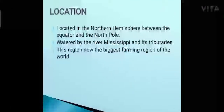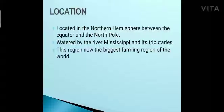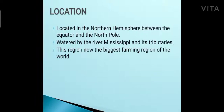Now we will study about the location of the prairies. The word 'prairie' has been taken from the French language and it means grassland. So in North America, these treeless grasslands are known as prairies. They are located in the northern hemisphere, between the equator and the North Pole.